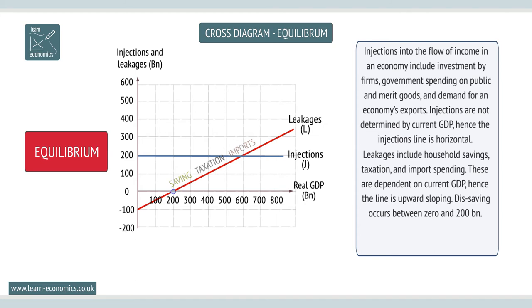Equilibrium exists when injections equal leakages, at point A and Y at $600 billion.